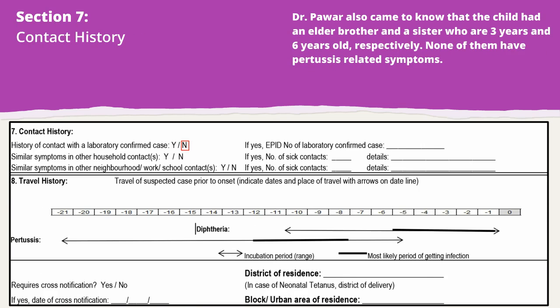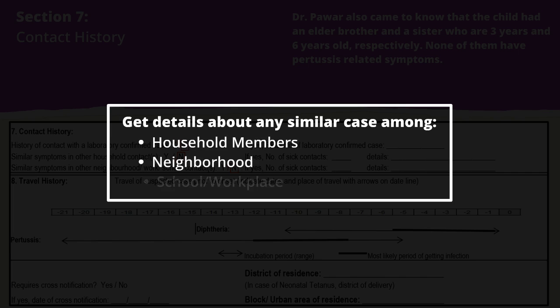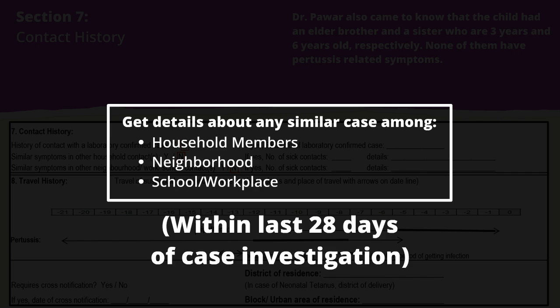The suspected case has no history of contact with a laboratory-confirmed case. Also, there are no persons in the household or neighbourhood having similar symptoms. From the patient or caregivers, get details about any similar case among other household members, neighbourhood, school, or workplace within the last 28 days.